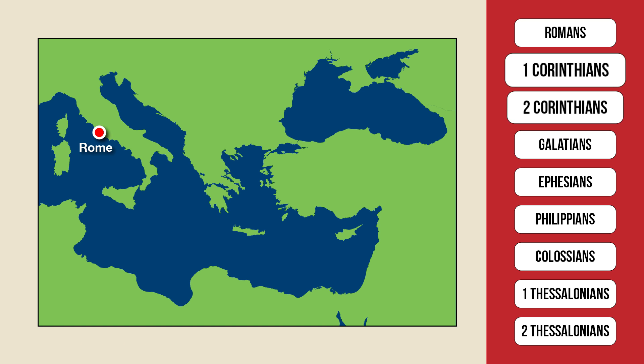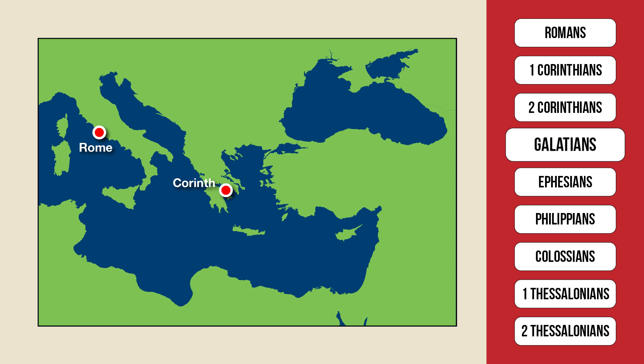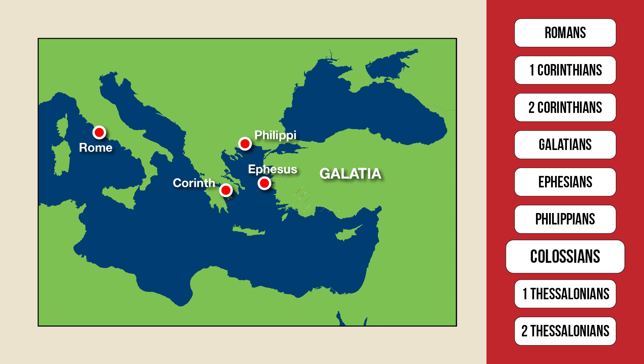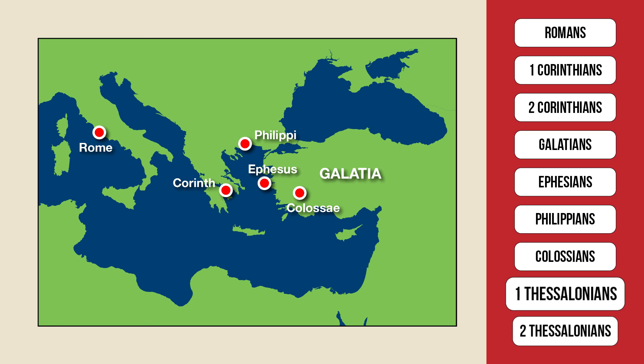Romans, of course, was sent to Rome, which is the most familiar location on the list. 1st and 2nd Corinthians were sent to Corinth, one of the major cities in Greece. Galatians was sent to Galatia — the only place name on this list that is not a city; it refers to an entire region located right in the middle of Anatolia, what is today Turkey. We then get Ephesians, sent to the city of Ephesus on the coast of Anatolia. Next, Philippians, sent to Philippi, a city in ancient Macedonia named after Alexander the Great's father, Philip. Colossians was sent to Colossae, yet another city in Anatolia. Finally, 1st and 2nd Thessalonians were sent to Thessaloniki, which is in the same region as Philippi.